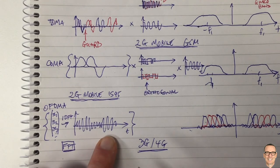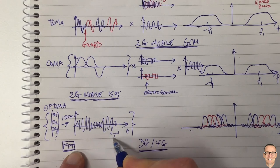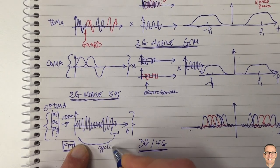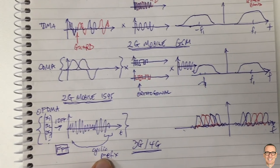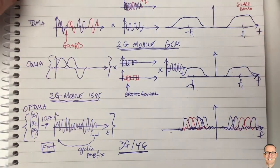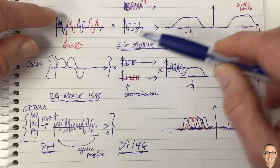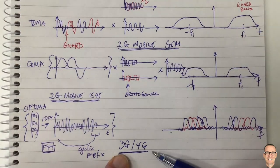There is a penalty: you need to have a cyclic prefix, which is discussed in another linked video. It's important to understand you don't get something for nothing — the cyclic prefix is the main penalty you pay for OFDMA. These are the reasons and signals that help understand what drove the choices and the evolution from initial 2G mobile to the much more flexible 3G and 4G physical layer.